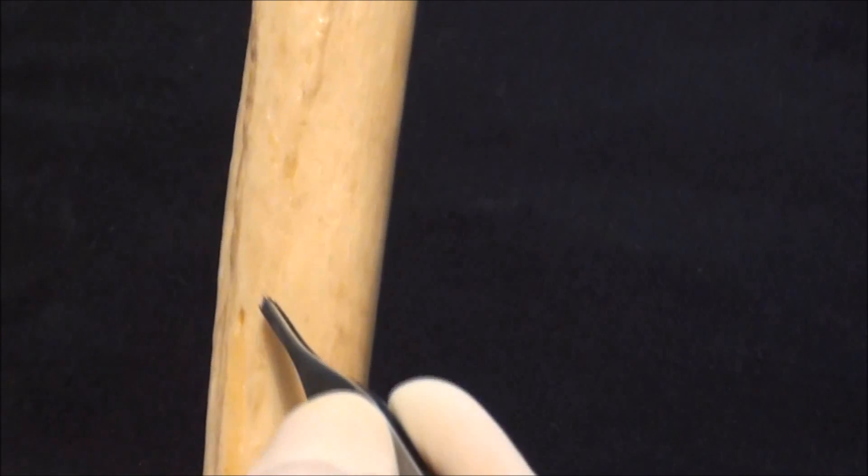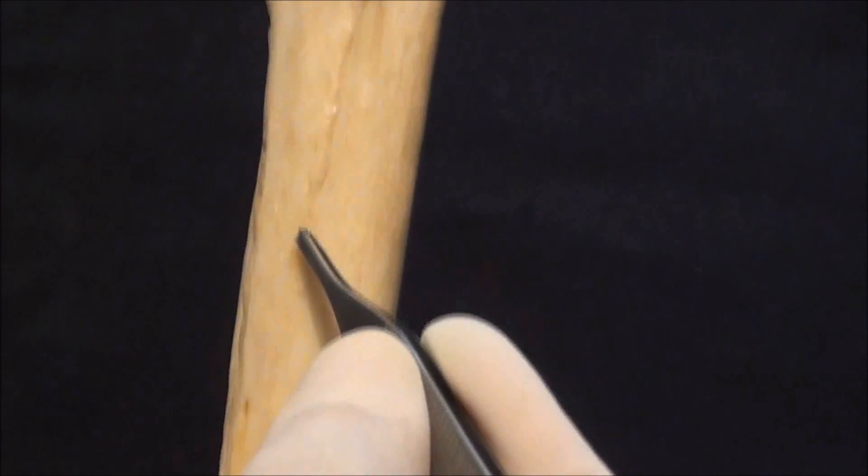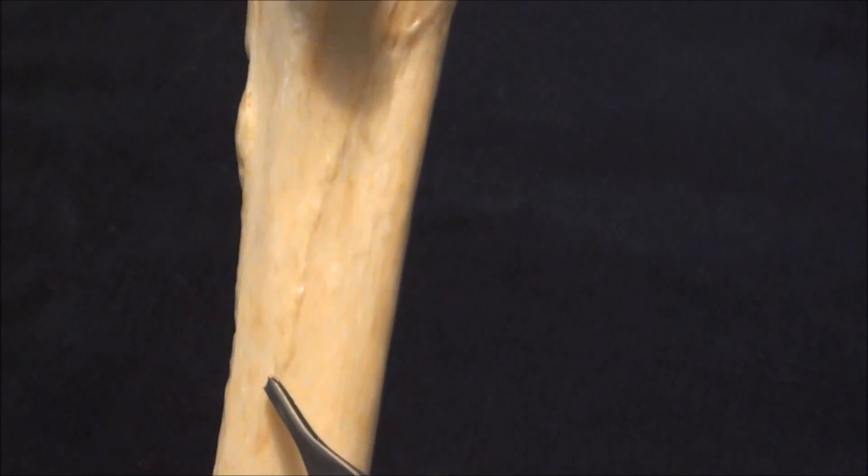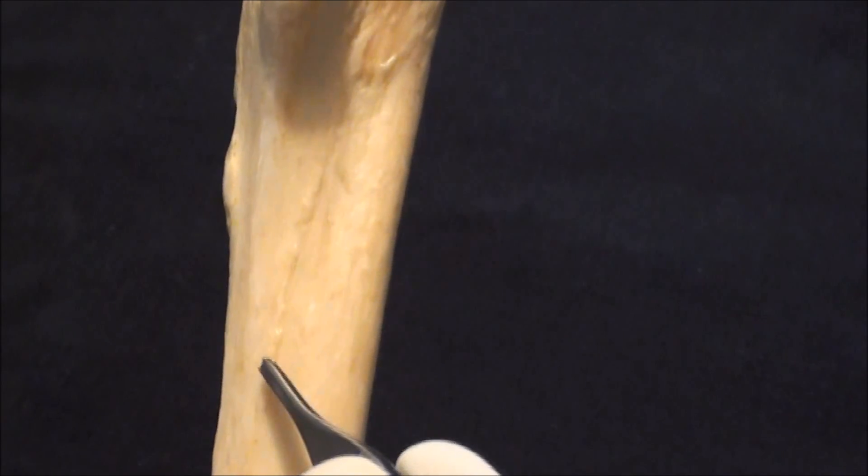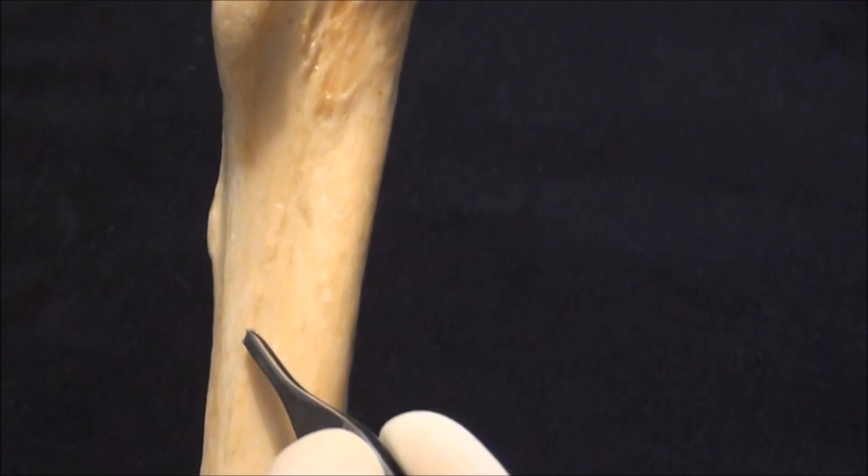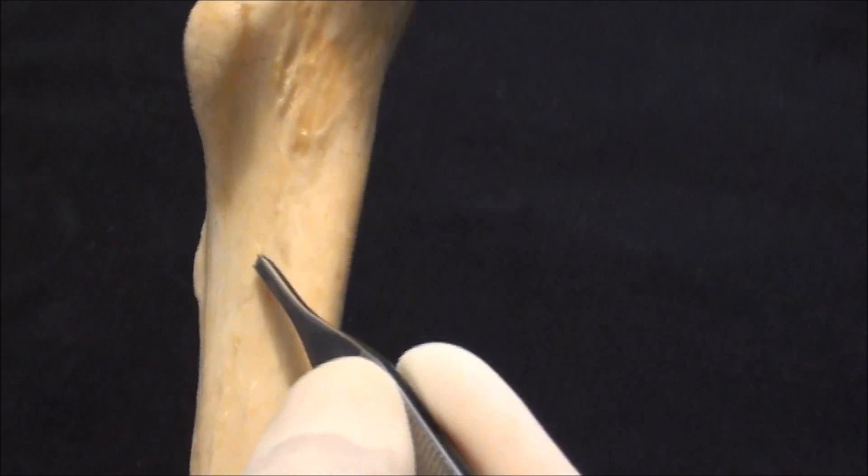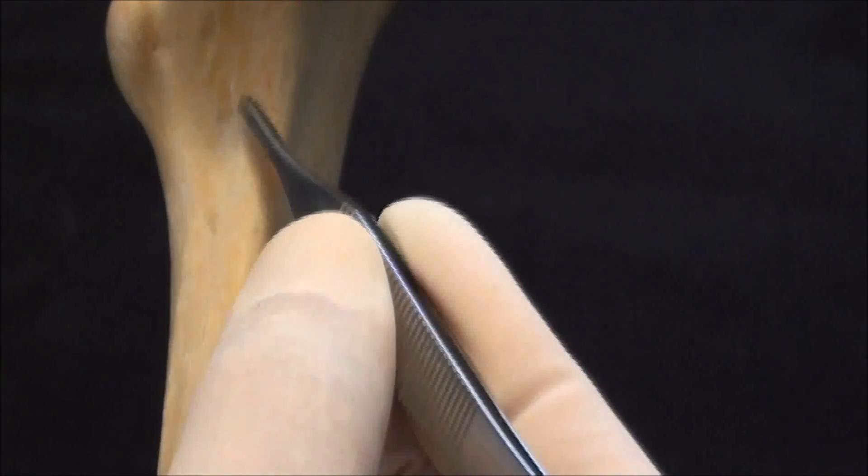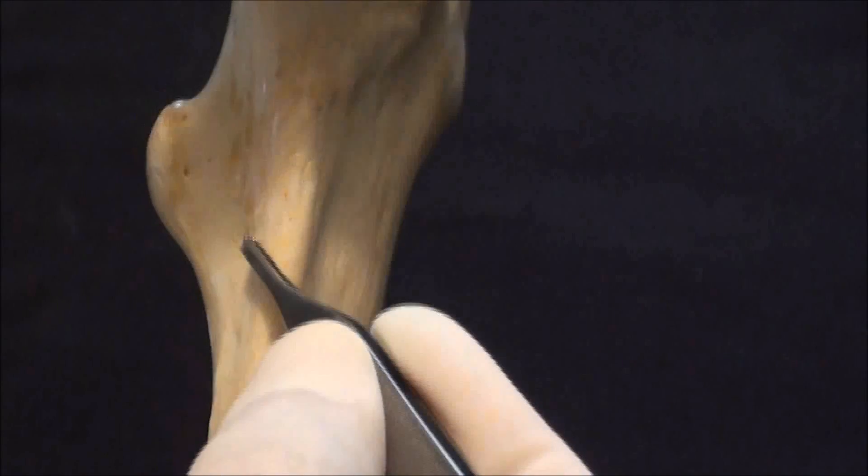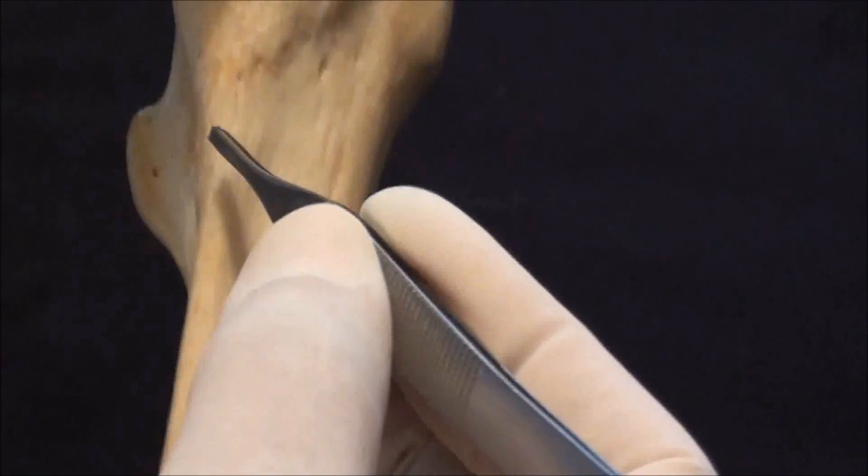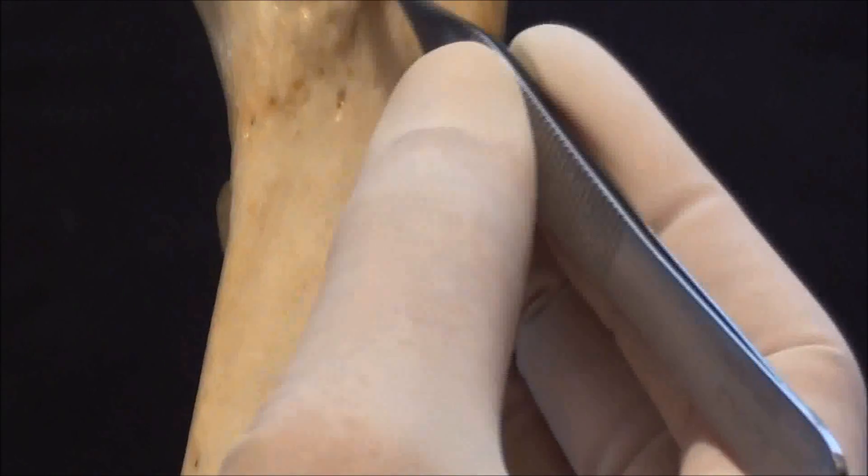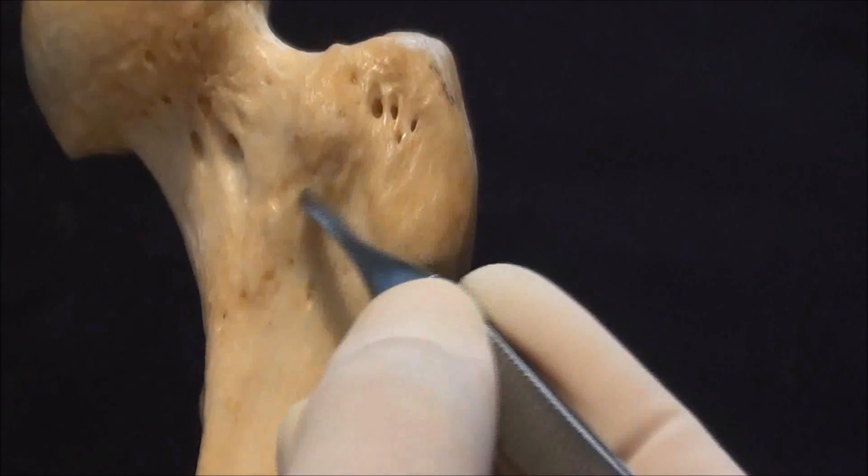So from linea aspera following the medial lip of the linea aspera we're now going more onto the medial aspect of the bone. This line becomes now known as the spiral line of the femur as it truly spirals from posterior to medial to the anterior aspect of the bone and the spiral line actually blends into intertrochanteric line on the anterior side of the femur.